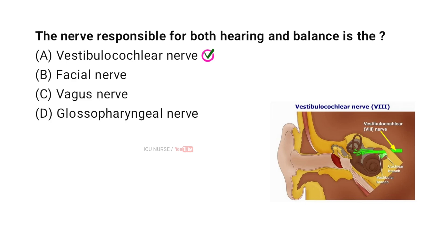The vestibular nerve transmits information about balance from the vestibule and semicircular canals in the inner ear. Together, these two branches help the brain process sounds and maintain balance and spatial orientation.